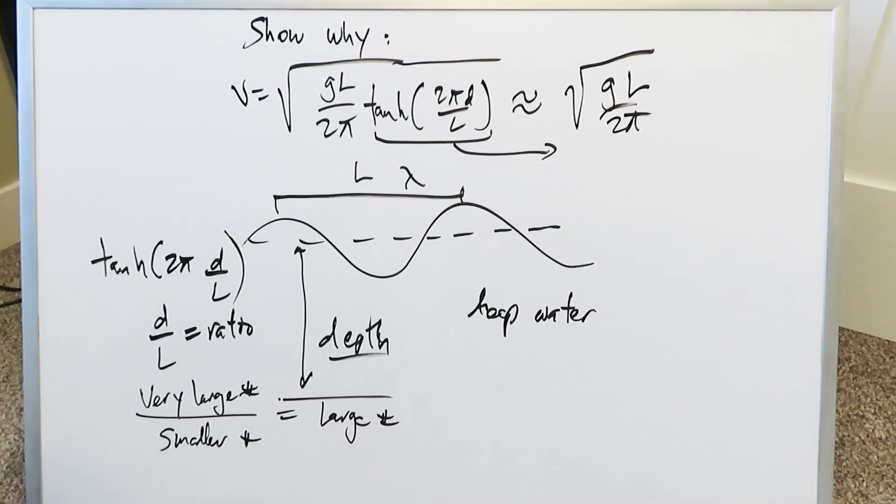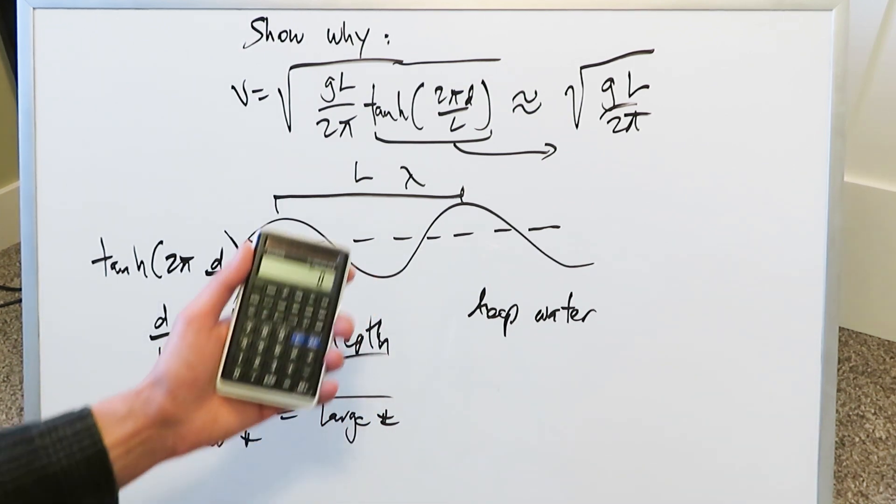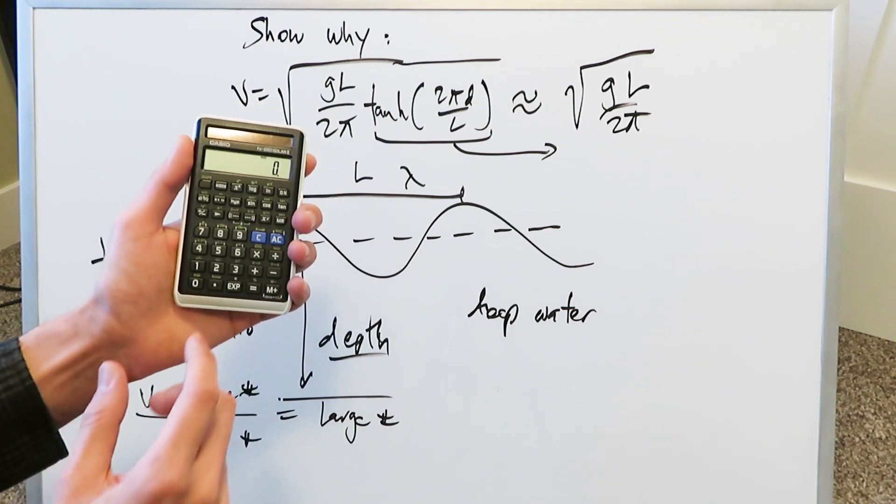And then when you do the hyperbolic tangent of that large number multiplied by 2π, you basically arrive at a horizontal asymptote of that hyperbolic function. Looking specifically right over here at this large number representing this ratio, let's run a value here on our calculator. We've put the calculator here on the radian mode.